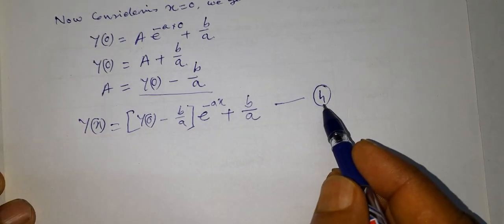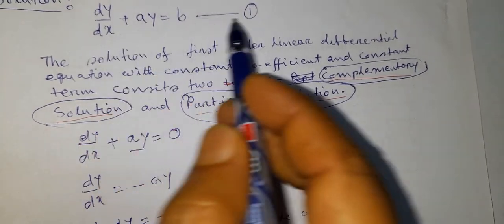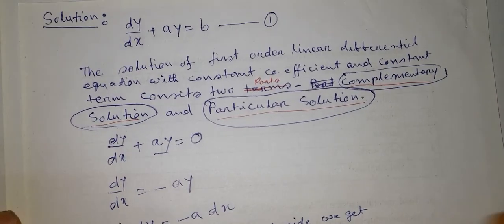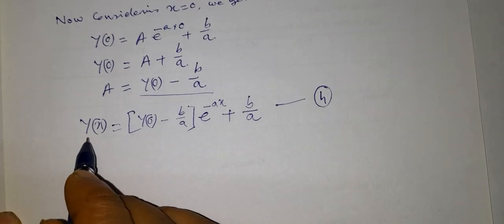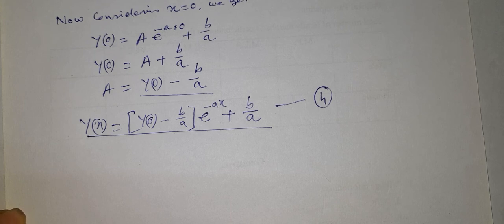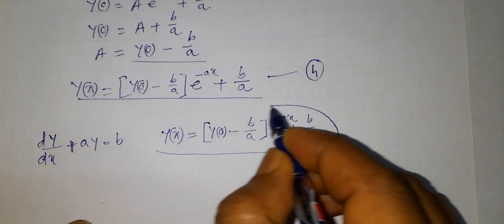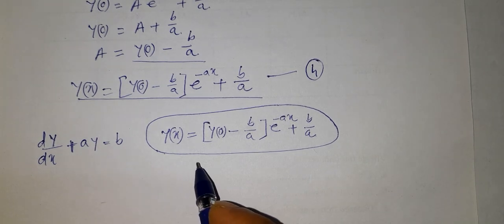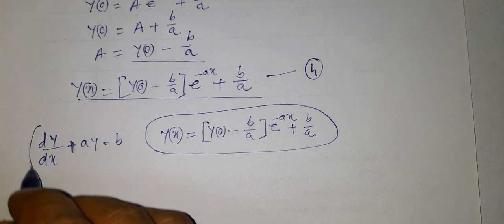So equation 4 is the complete solution of differential equation 1. This is how we solve a first order linear differential equation with constant term and constant coefficient, and we may use this as a general solution or as a formula for solution of a differential equation of this type.